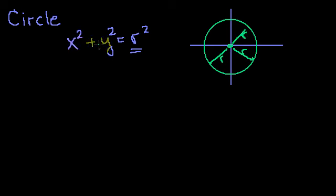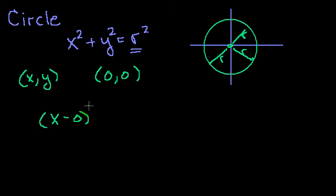And to some degree, this formula, all it is is an extension of the distance formula, which is really just the extension of the Pythagorean theorem. So for example, the distance formula, if I want to know the distance between some point x comma y and the point 0, 0, what you do is you take the difference of the x's, so x minus 0, you square that, and then you add that to the distance between the y's squared. So that's y minus 0 squared, and that is equal to the distance squared.